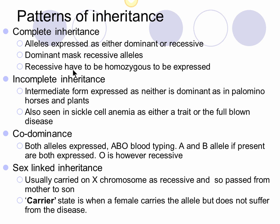The second pattern is incomplete dominance, seen quite often in plants. This is when neither allele is dominant nor recessive — you mix the two and get something in between, like mixing colors. For example, if you cross a red hibiscus flower with a white one, you get a pink — it's an in-between. That's why it's called incomplete dominance. It's also seen in Palomino horses: cross a brown horse with a white horse, and the Palomino born has both brown and white in its coat.